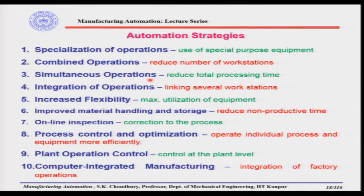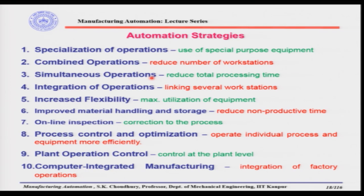The next point is simultaneous operations, which means that operations combined in a machine can be done simultaneously. For example, suppose we need to turn a part, then chamfer it, then cut it into pieces. In one machine, we can do that in sequence: first turning, then a chamfering tool, then a parting tool. Simultaneous operation means we are doing all three at once, drastically reducing total processing time, whereas combined operations reduces the number of workstations.